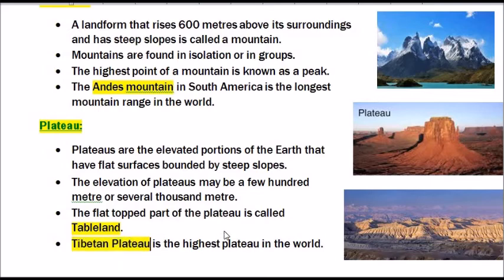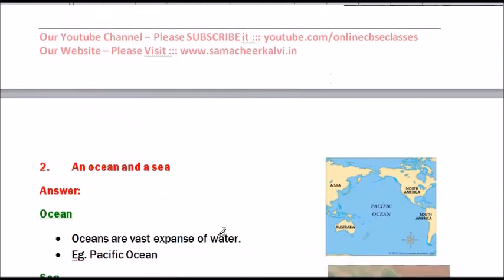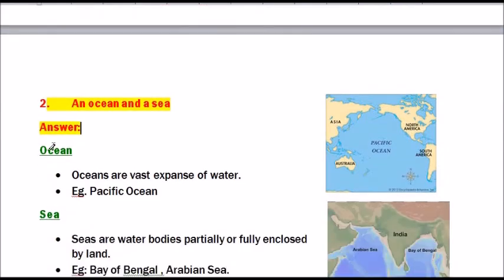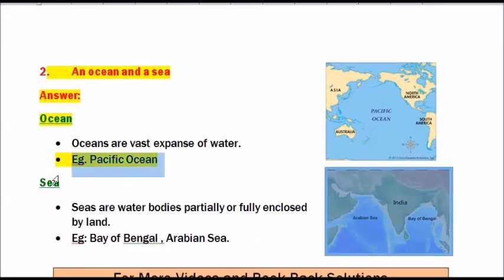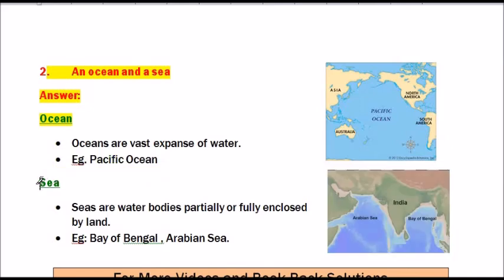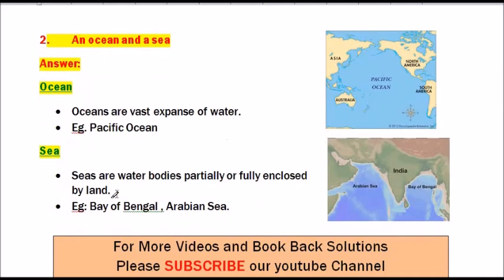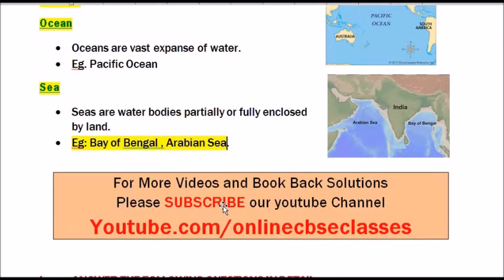Plateau: Plateaus are elevated portions of the earth that have flat surfaces bounded by steep slopes. The elevation of plateaus may be a few hundred to several thousand meters. The flat topped part of the plateau is called tableland. Tibetan Plateau is the highest plateau in the world. For an ocean and a sea: oceans are vast expanses of water (e.g., Pacific Ocean), while seas are water bodies partially or fully enclosed by land (e.g., Bay of Bengal, Arabian Sea).